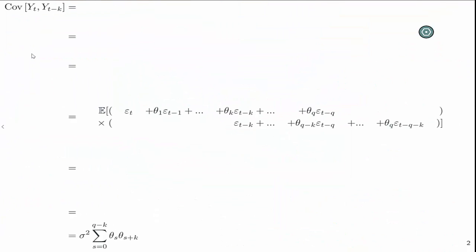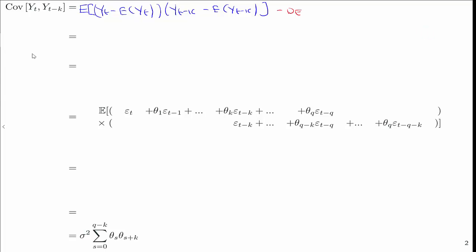So we're now going to derive the general covariance function for a general MA(q) process. We want to work out the covariance of yt and yt minus k for any k less than q, because we know for any lag greater than q, the covariance is naught. First, we just state the definition of the covariance function. We always start with the definition of the thing we're trying to derive.